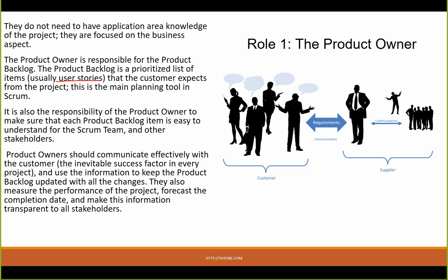The product backlog is a prioritized list of items, usually user stories. For example, customer registration, customer login, customer logout — each is a user story. This is the main planning tool in Scrum. The product backlog defines what the customer expects from the project.